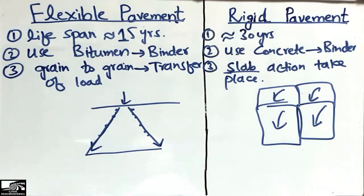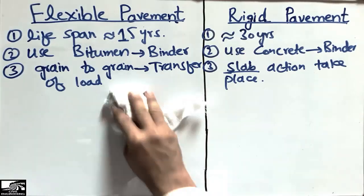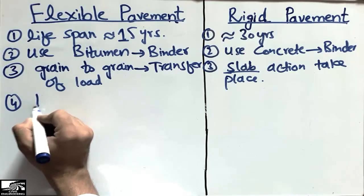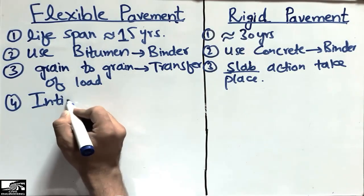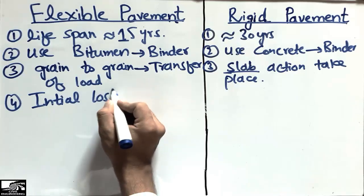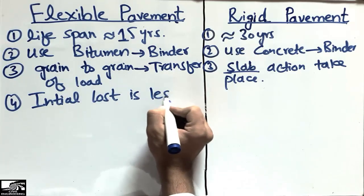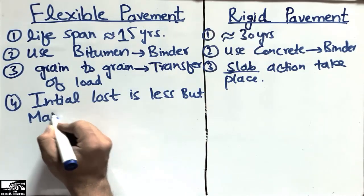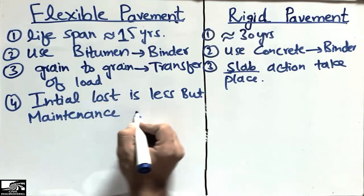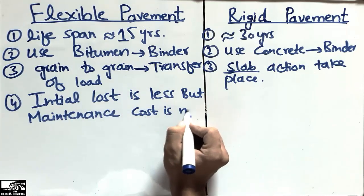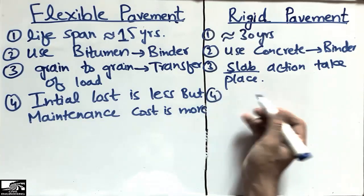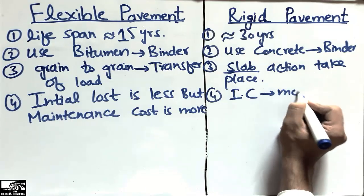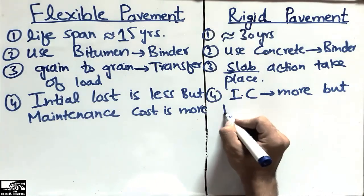Another difference is the cost. The initial cost of flexible pavement is less, but its maintenance cost is more. In contrast, for rigid pavement, it is the opposite — the initial cost is more, but the maintenance cost is less.